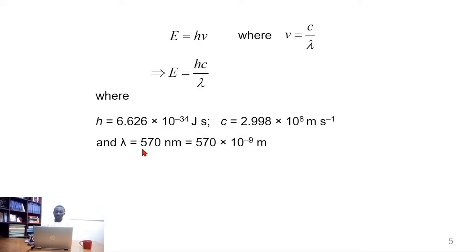The wavelength is 570 nanometers, but we cannot use it as 570 nanometers. We first of all need to convert it to meters, and we do that by simply replacing the nanometer by 10 to the power of negative 9.